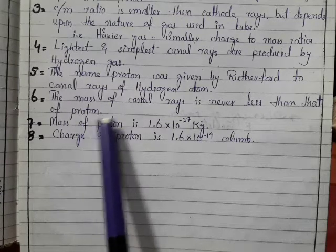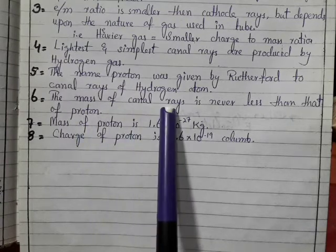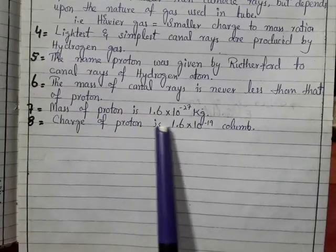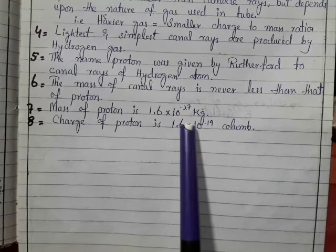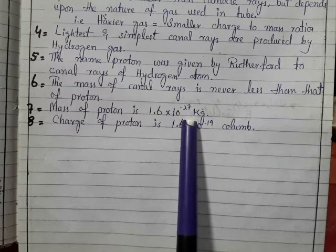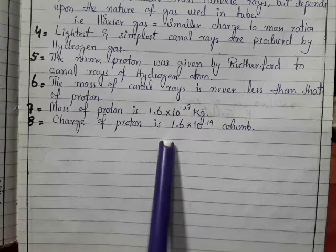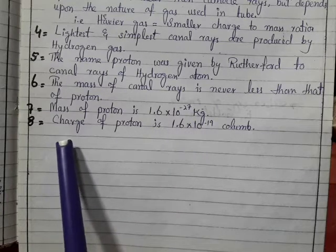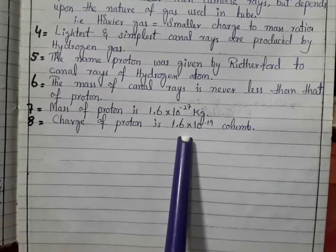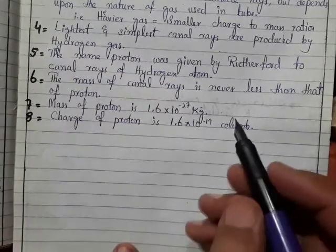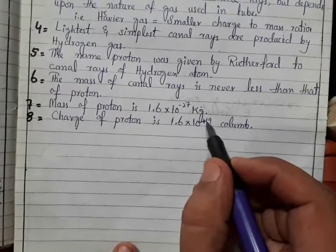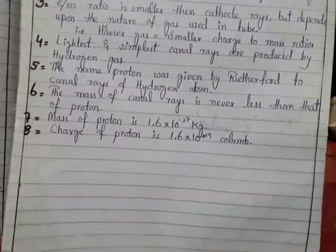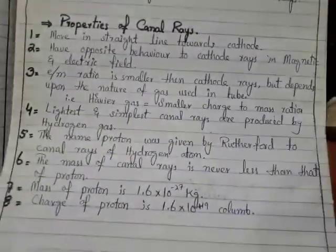The mass of canal rays is never less than the mass of the proton. The mass of the proton is 1.6 × 10^-27 kg, and the charge of the proton is 1.6 × 10^-19 coulombs, positive. This is all about the discovery of the proton.